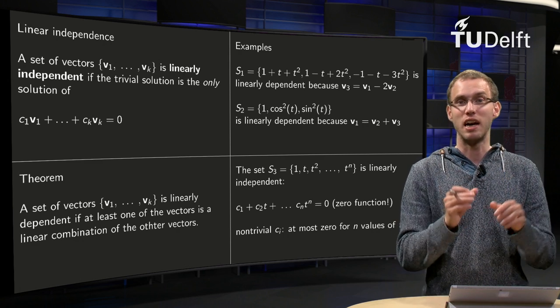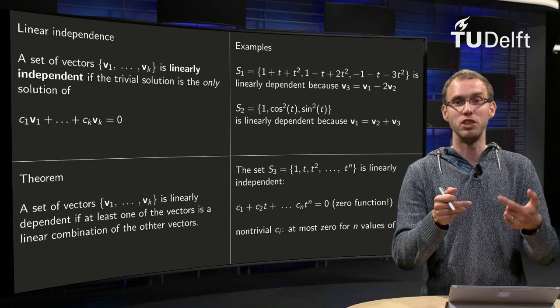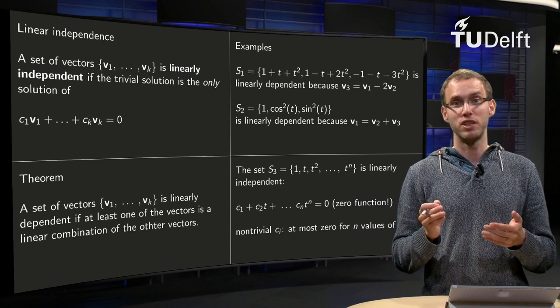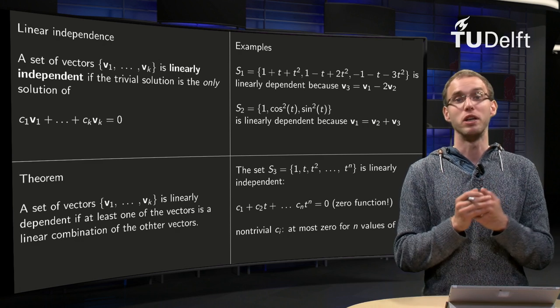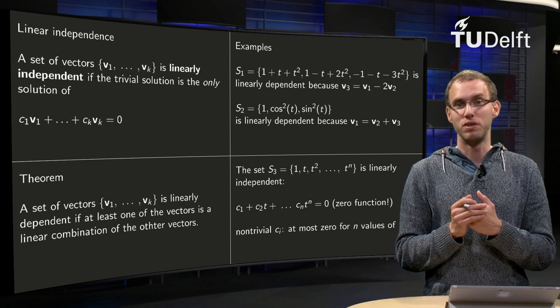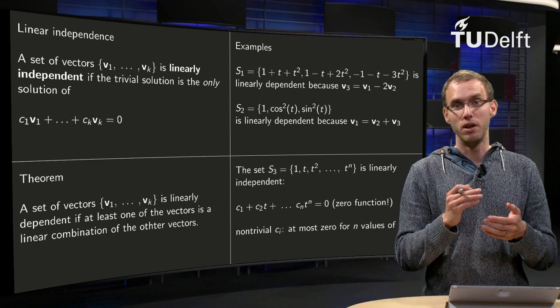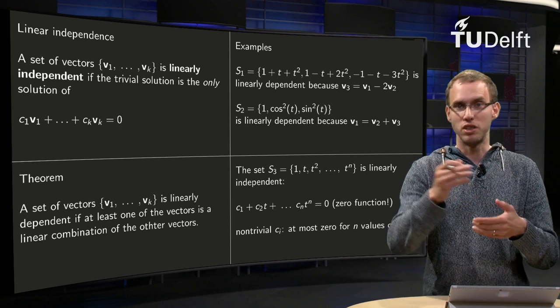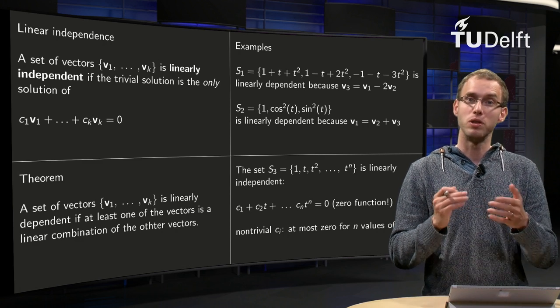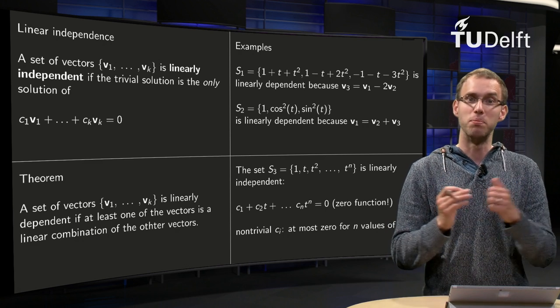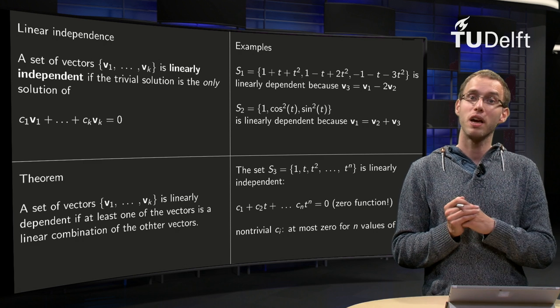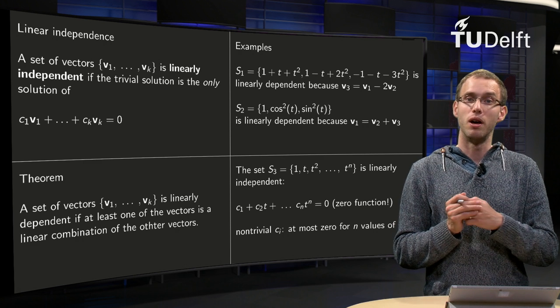So this function on the left hand side is, at most, n positions 0 and certainly not everywhere. It will only be everywhere 0 if you choose all your weights to be 0. Then we know that the only solution of the equation, c1 times 1, etc., equals 0 is the 0 solution, so then we know that our set 1, t, t squared, etc., is an independent set. And that is an example which we will be able to use much more often.